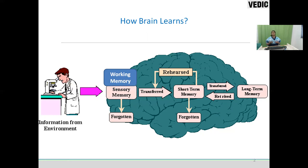In long-term memory, information is available in the form of schemas. Schemas are generated when the student starts perceiving, thinking, processing, deducing, and inducing upon that information. For novice users, schemas are very limited, whereas for expert learners, schemas will be very powerful and will start associating, relating, clustering periodically.